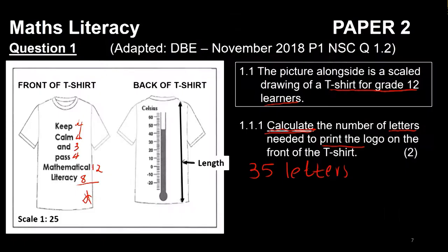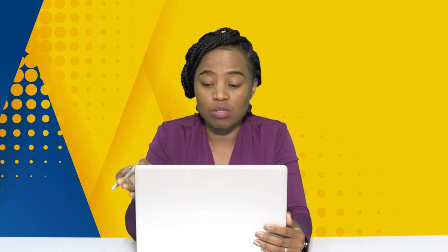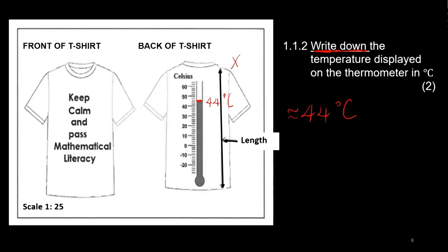The next question says 'write down,' meaning you just need to read it off somewhere. Looking at the picture where the volume is shown, the small lines represent increments of two, so reading off the scale gives approximately 44 degrees Celsius. This is part of measuring — you measure temperature, volume, and weight using BMIs and scales. The following question asks us to explain the meaning of the scale in the drawing. The scale is 1:25, meaning one unit on the picture or diagram represents 25 units in reality. Make sure you specify whether you're referring to the picture, diagram, or map, and what it represents in reality.